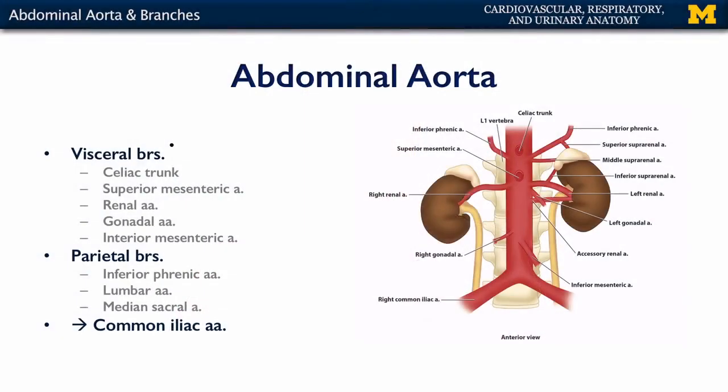Let's continue to talk about arteries. In this video, we'll talk about the abdominal aorta and its branches and derivatives. The abdominal aorta is the continuation of the aorta beyond the diaphragm, and there are two major sets of vessels: the visceral branches, which supply blood to the abdominal pelvic viscera, and the parietal branches, which supply blood to the body wall.